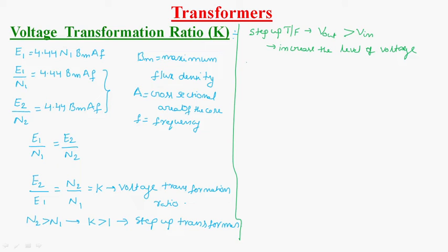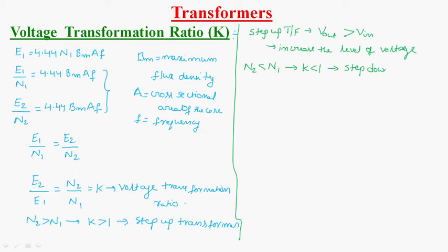Whenever N2 is less than N1 — that is, the number of turns in the secondary winding is less than the number of turns in the primary winding — then K is less than 1, and we can say the transformer is a step-down transformer. A step-down transformer is used whenever the output voltage of the transformer is less than the input voltage, and it is used to decrease the level of output voltage.